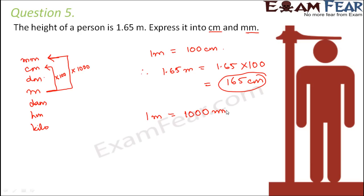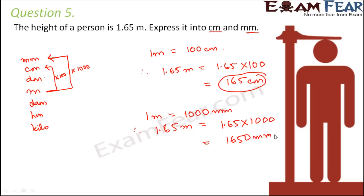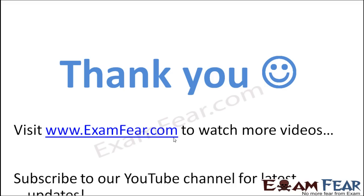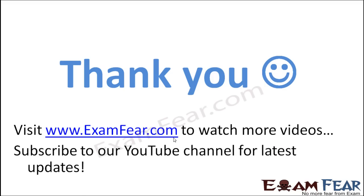Similarly, one meter equals 1000 millimeters. Therefore, 1.65 meters equals 1.65 × 1000 = 1650 millimeters. Thank you — please visit examfear.com to watch more educational videos. Please do not forget to like and subscribe to our YouTube channel for the latest updates. Thank you once again.